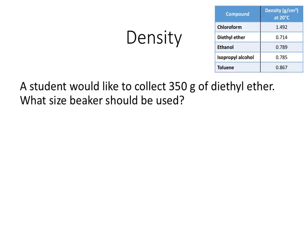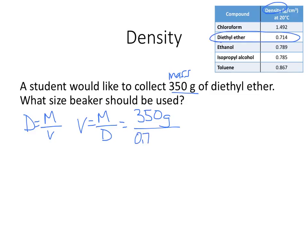Another density problem using the same chart as the problem above. A student would like to collect 350 grams. That's going to be a mass of diethyl ether. What size beaker should be used? Okay well I have the density of diethyl ether. So with this formula density is mass over volume. I have mass and density which means I'm going to be looking for volume. It's going to be mass divided by density.